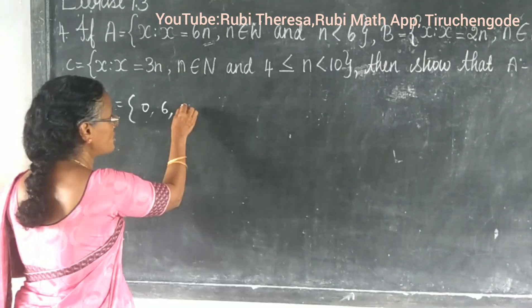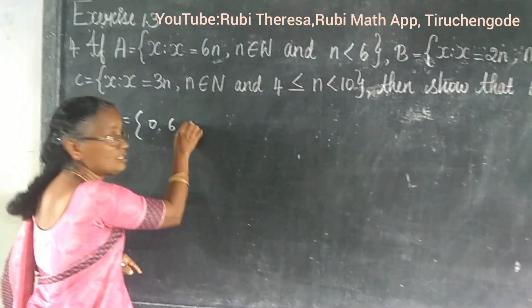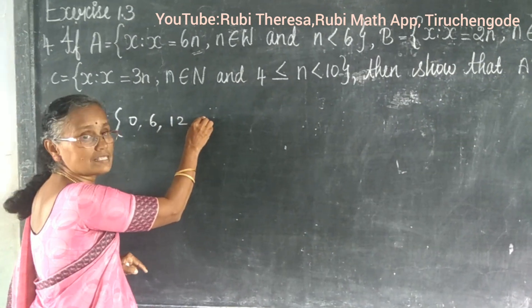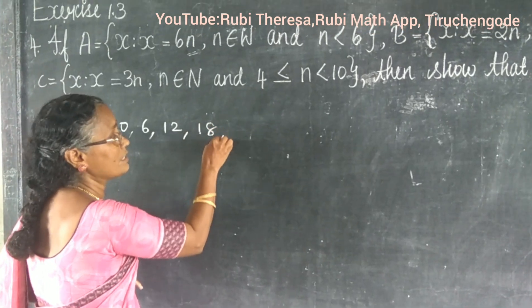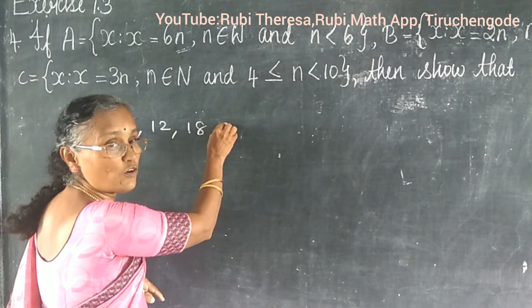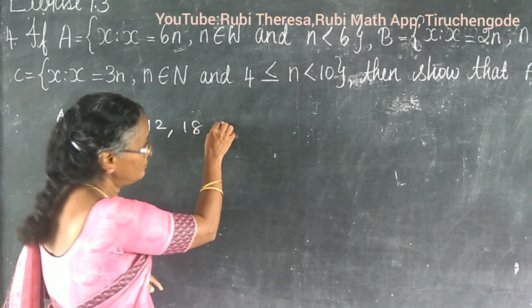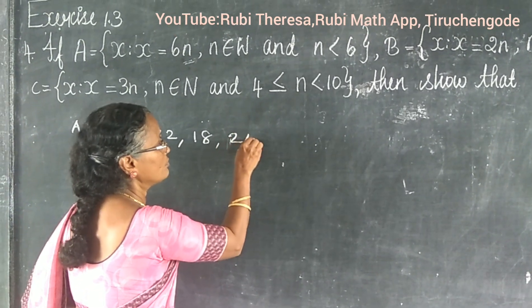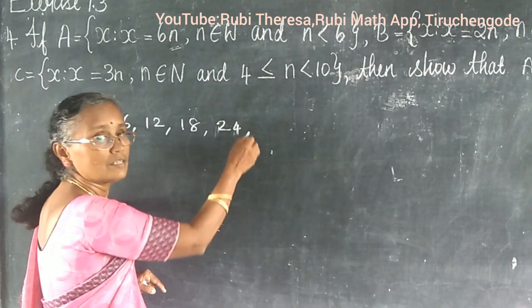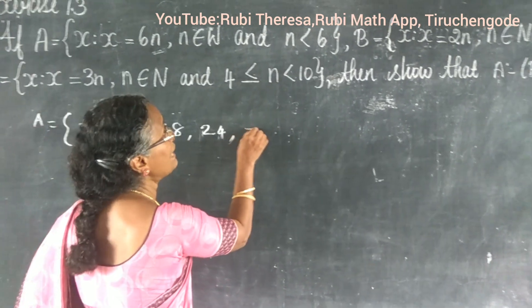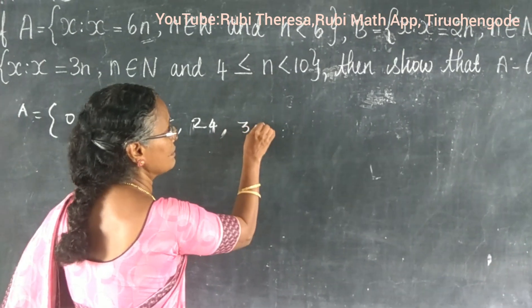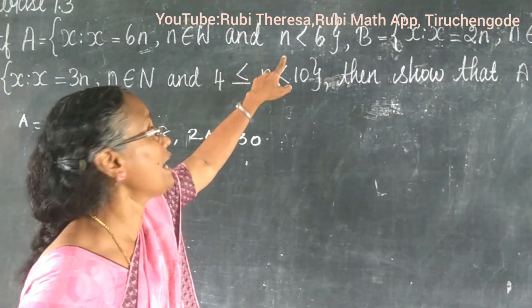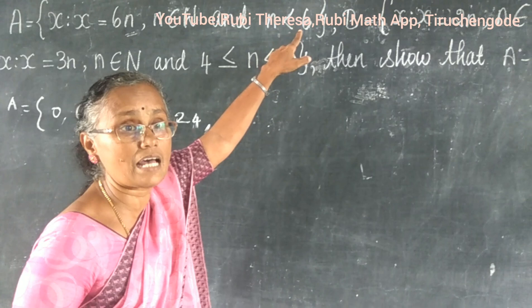6 times 2 is 12. 6 times 3 is 18. 6 times 4 is 24. 6 times 5 is 30. Now, should you write 6 times 6?